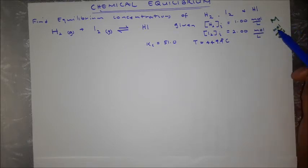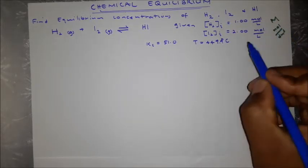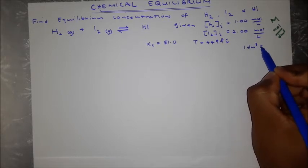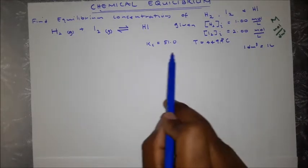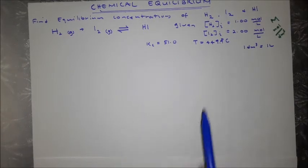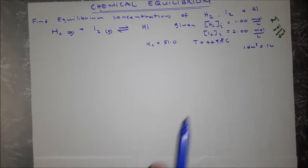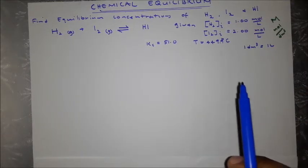These concentration units can be written differently — mol/L, mol dm⁻³, or M — but they all mean the same thing. 1 dm³ equals 1 liter. We are also given the value of Kc = 51.0 at the given temperature. The question is: how do we find the equilibrium concentrations of these species?